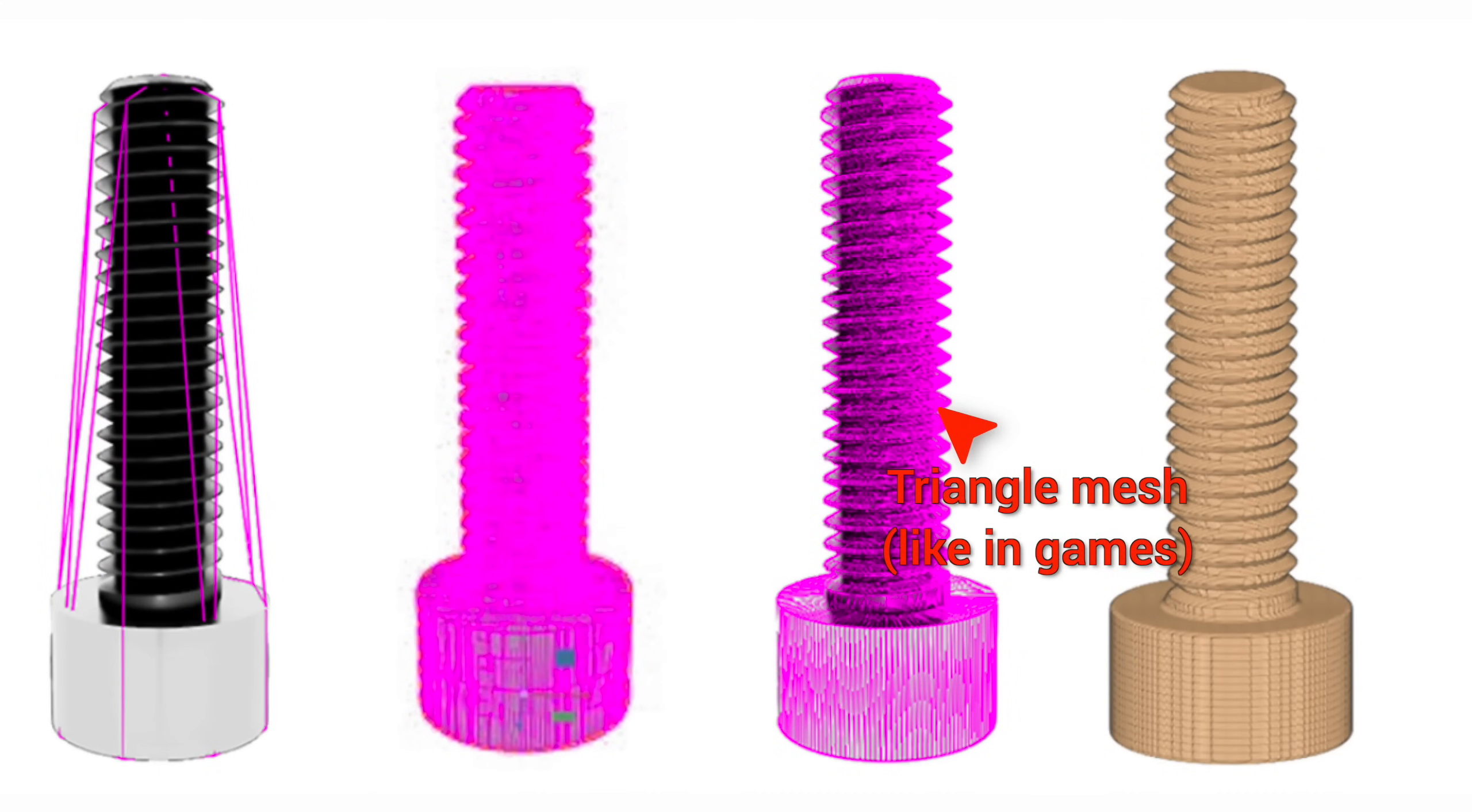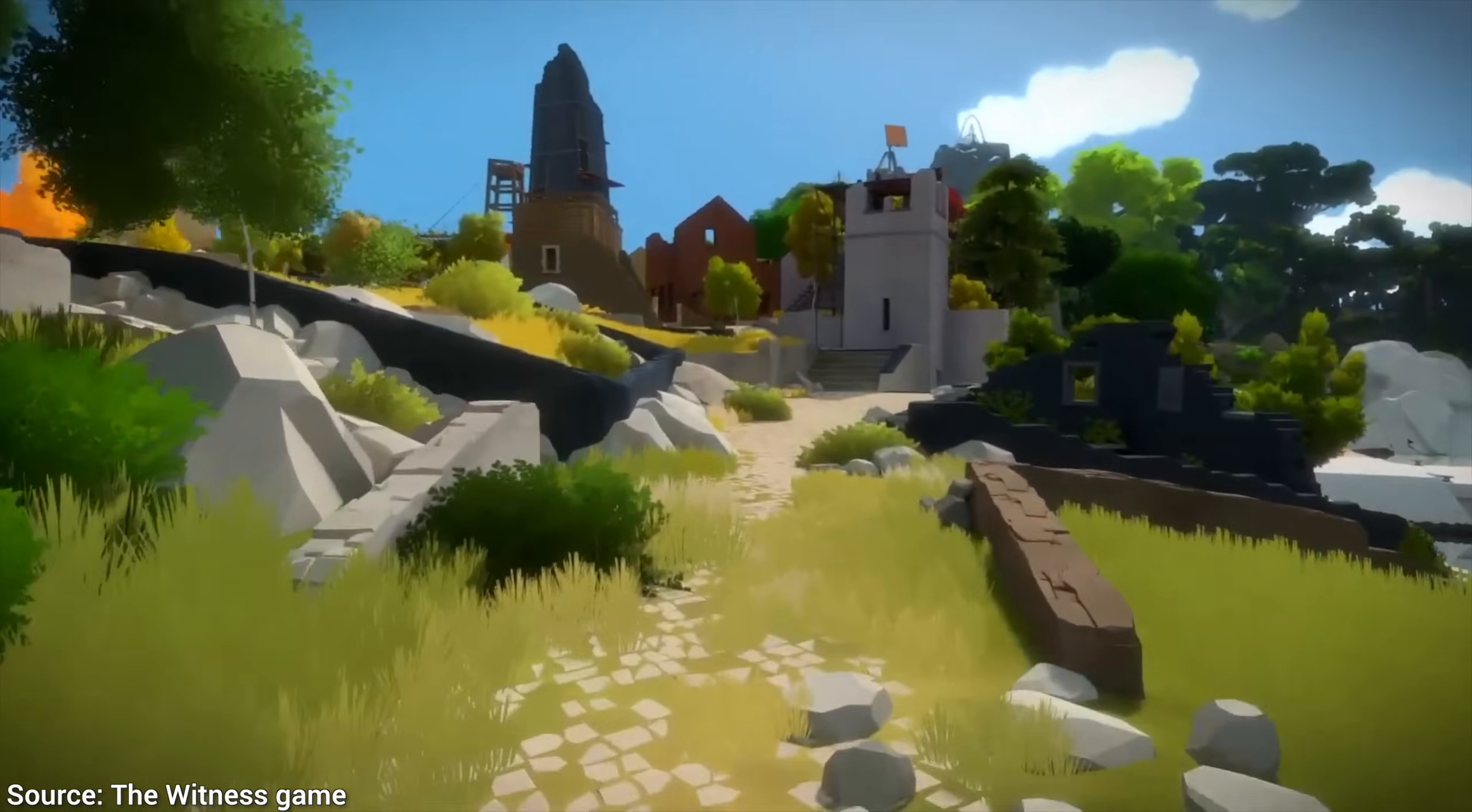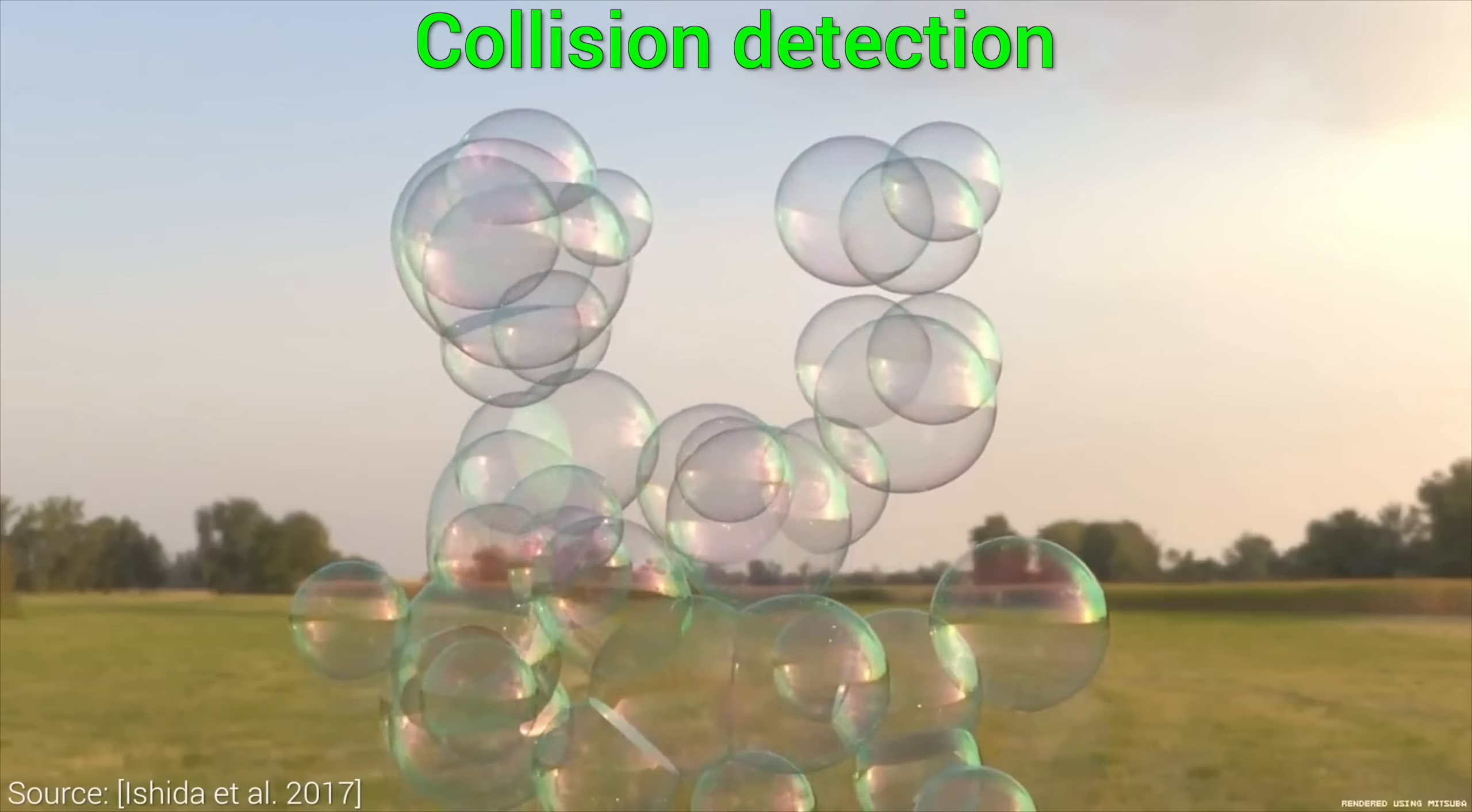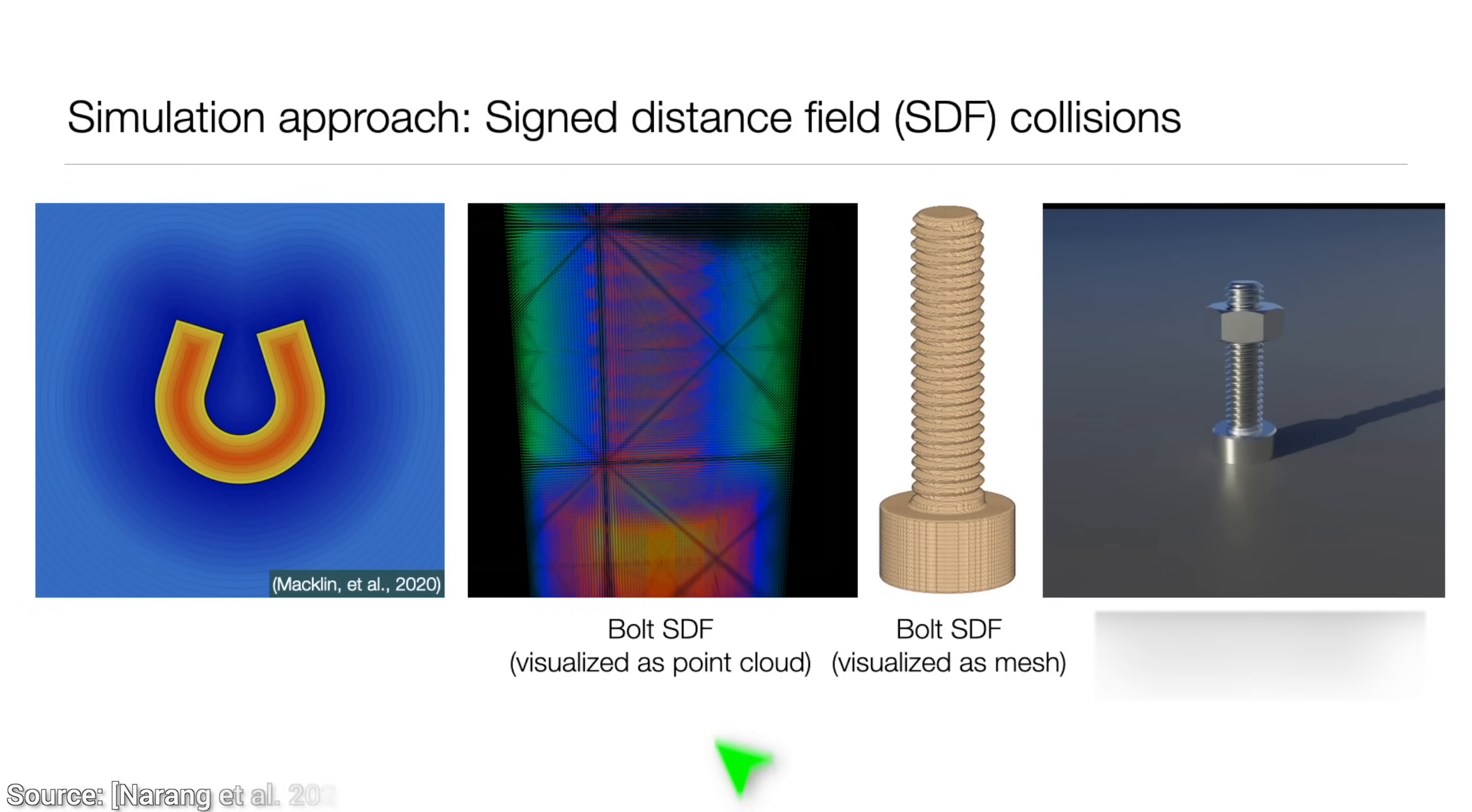What about triangle meshes? These are used for detailed geometry in video games too. Well, yes, that would work. However, unfortunately, detecting collisions between the nuts and bolts takes too long. And this paper proposes a way to represent these geometries in a way that can give us a super detailed bolt. Okay, that's good.